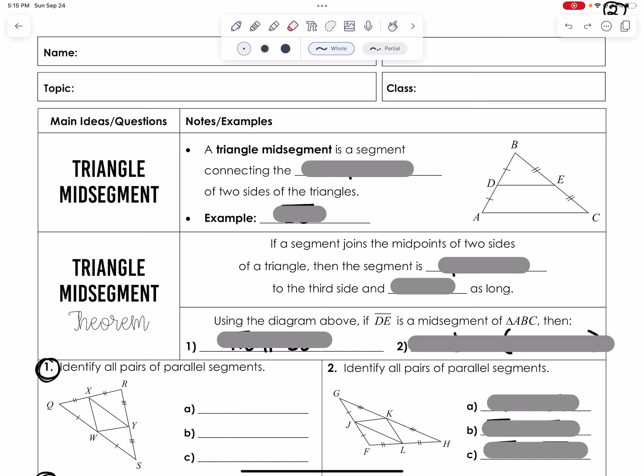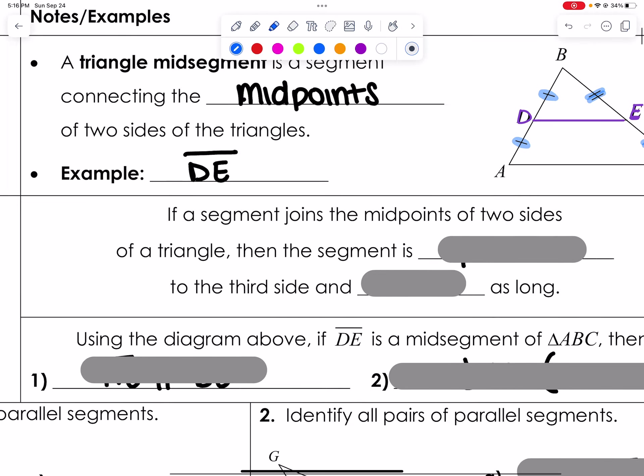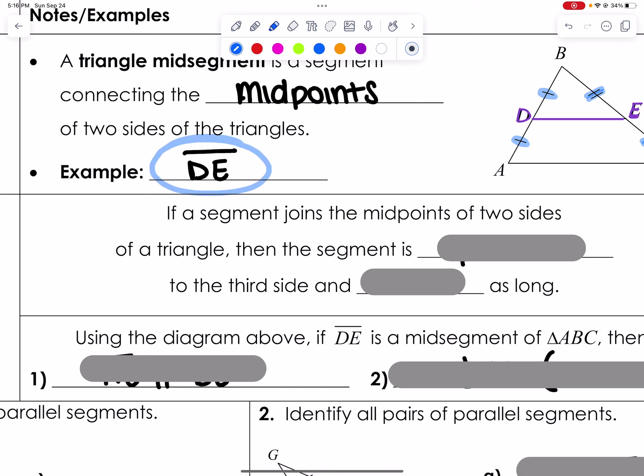A triangle midsegment is a segment connecting to the midpoints of two sides of the triangle. So for example, in this figure, segment DE is the triangle midsegment. Again, it's in the name. It is a segment. So I would take a different color and go ahead and highlight D to E as the midsegment that they are talking about here.